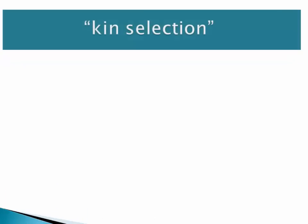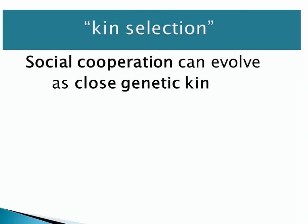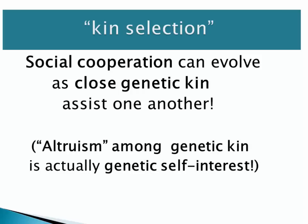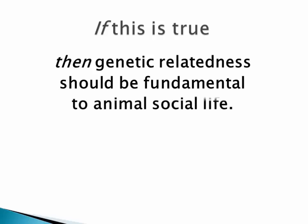A prediction that comes out of Hamilton's Rule is kin selection — the idea that social cooperation can evolve as close genetic kin assist one another. This is based on Hamilton's argument that altruism, when practiced among close genetic kin, is actually a form of genetic self-interest. And if that's true, we should find that genetic relatedness matters in terms of how animals behave.